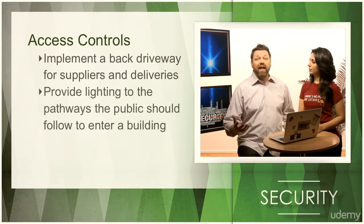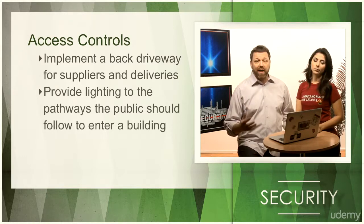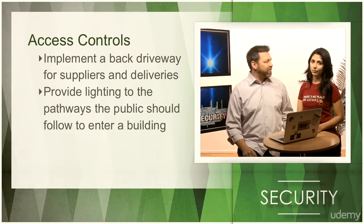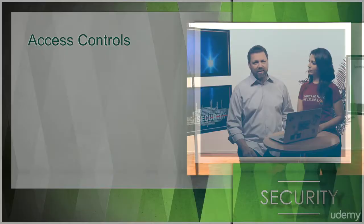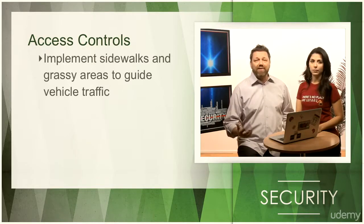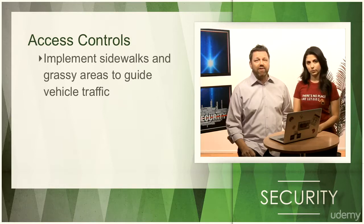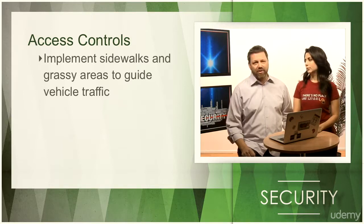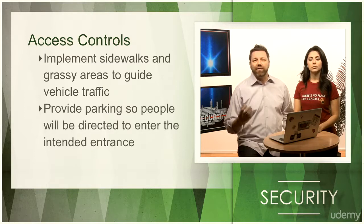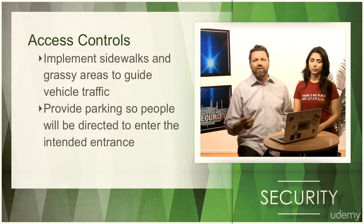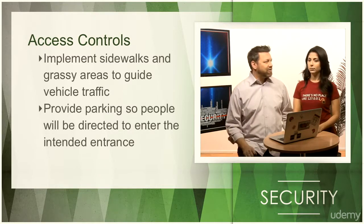You can provide lighting to the pathways the public should follow to enter a building to help encourage that entry as one used for access. Implement sidewalks and grassy areas to guide vehicle traffic to enter and exit only through specific locations. You can provide parking in the front of the building so people will be directed to enter the intended entrance.